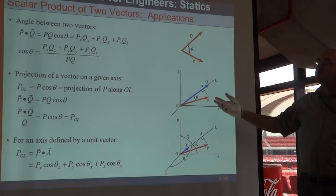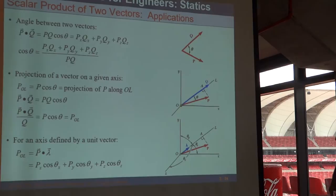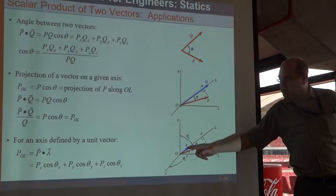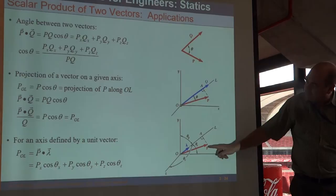Projection of a vector on a given axis - or as we call it, the component of a vector in a given direction. Projection and component mean the same thing. So if we have a vector p here, we'd like to know what its component is in the direction l. All we have to find is the unit vector in the direction l, and dot product it. That will give us the projection or component of p in the direction l.